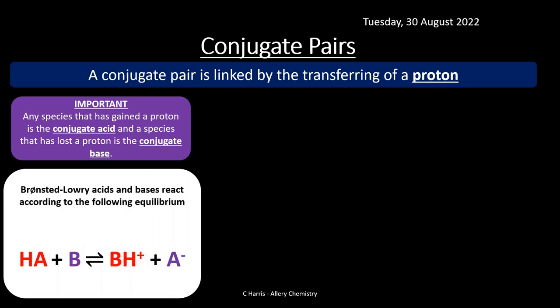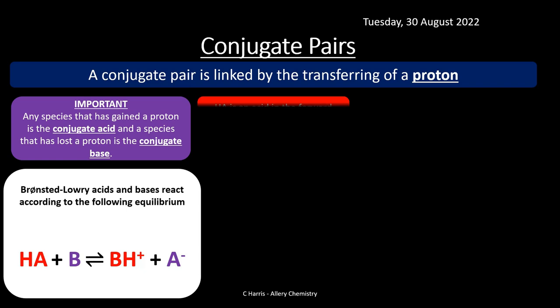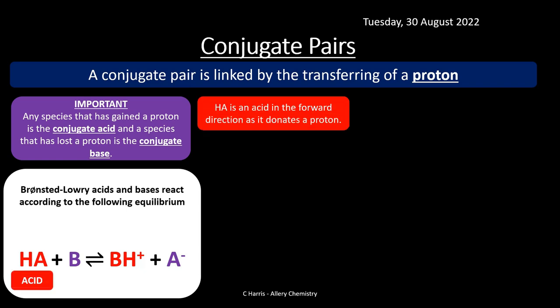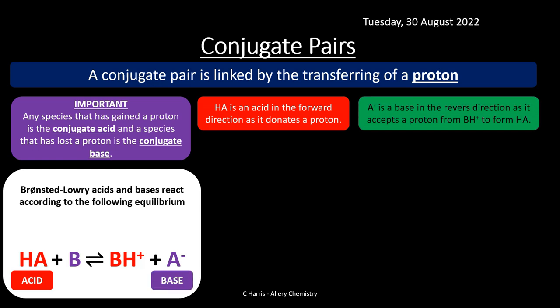You've seen this in year one about Brønsted-Lowry acids and bases. Here's a generic equation showing an acid and a base. HA is your acid, B is your base, and you've got BH+ and A−. The acid HA will donate a proton to B to form BH+, making it an acid, while B has received the proton, making it a base. So HA is an acid in the forward direction — it donates the proton — and A− is a base in the reverse direction, as it accepts a proton from BH+ to form HA.